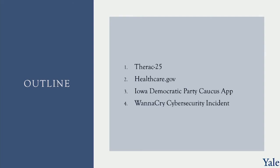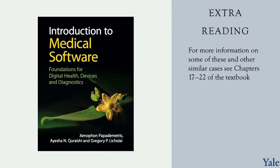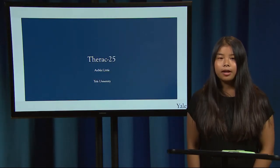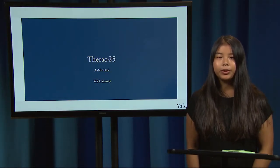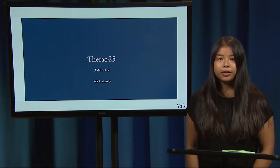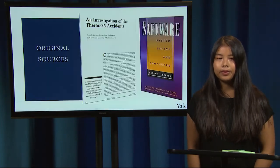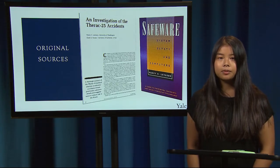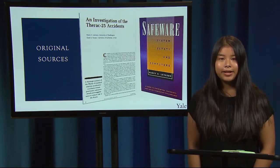Here is the outline for the four vignettes. I will be presenting the first, and my peers will present the other three. For more information on some of these and other similar cases, see chapters 17-22 of the textbook. The basics of Therac 25 are covered in the first lecture video in week two. My goal for this vignette is to provide more details of the situations and decisions that led to the incidents. The following details about Therac 25 come from two sources by Nancy Levison from 1993 and 1995.